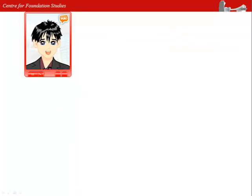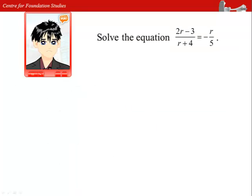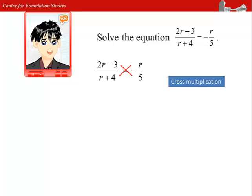Let's take a look at another question: 2r minus 3, divided by r plus 4, equals to negative r over 5. Since there are fractions on both sides, we can get rid of the fractions by doing cross multiplication.